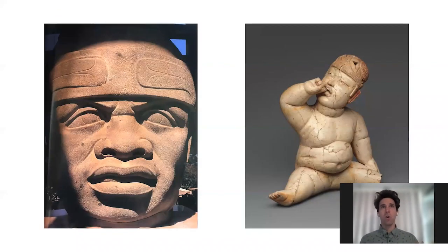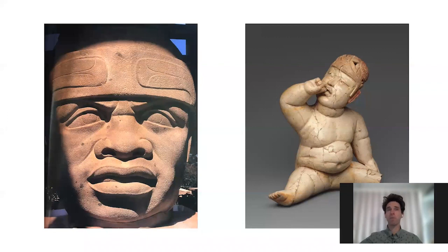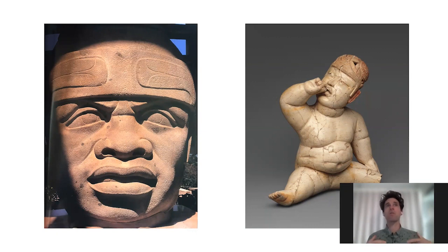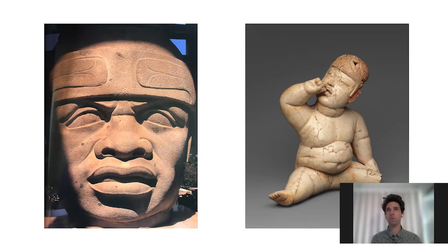So we have the Olmec head on the left — these are close to six feet tall, very dense, very heavy. Imagine a Volkswagen Bug from the seventies; some of these heads are 25 tons — imagine 25 Volkswagen Bugs compressed into the scale of one. That's the weight that has been given and imbued with a sensitivity of skin, close to 3,000 years ago.